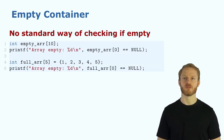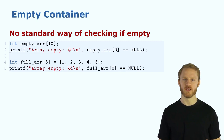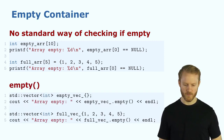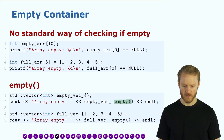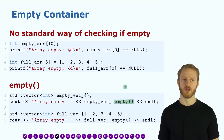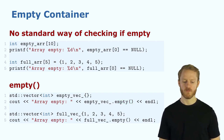The same happens if we want to check for an empty container — there is no standard way of doing this using arrays. But if we use a standard container like vector, we just call the function `empty`, which will return a boolean: true if the vector is empty, or false if it is not. The intent of the program is clear in the code itself.